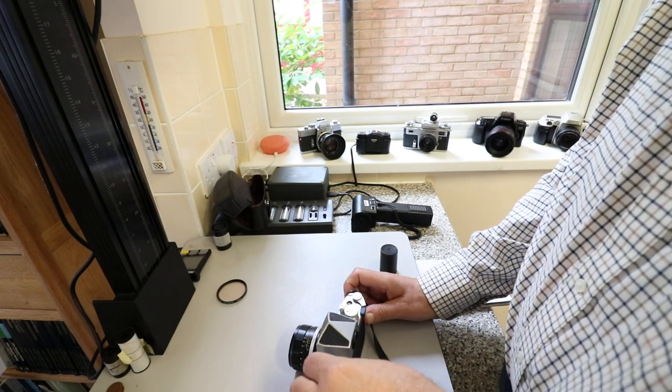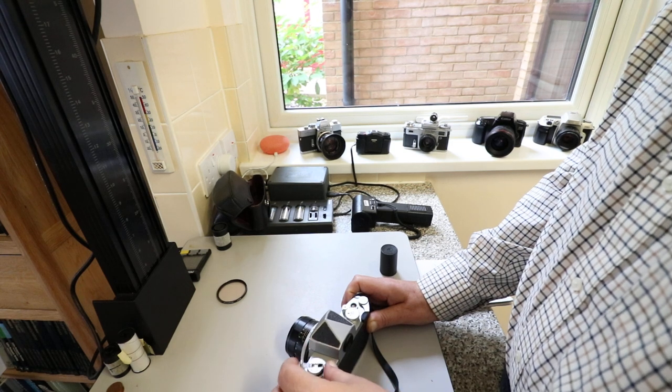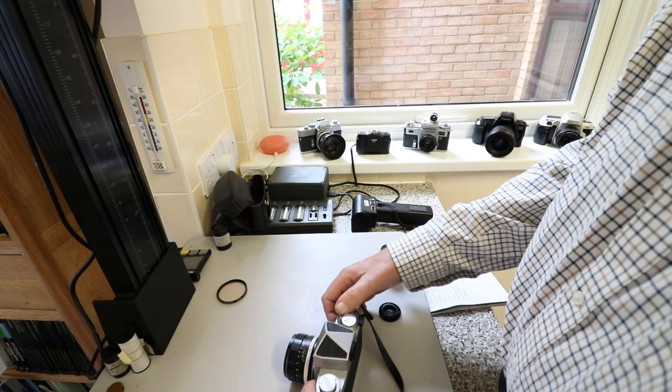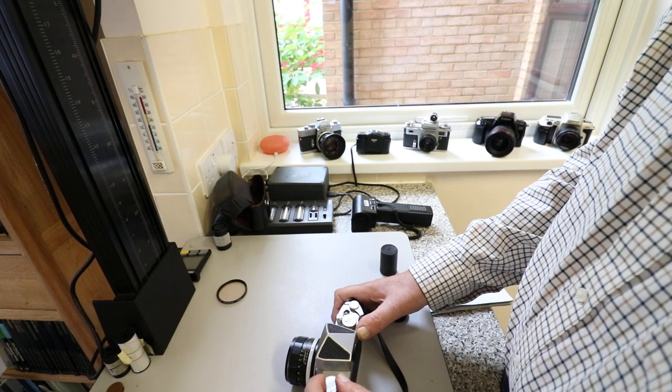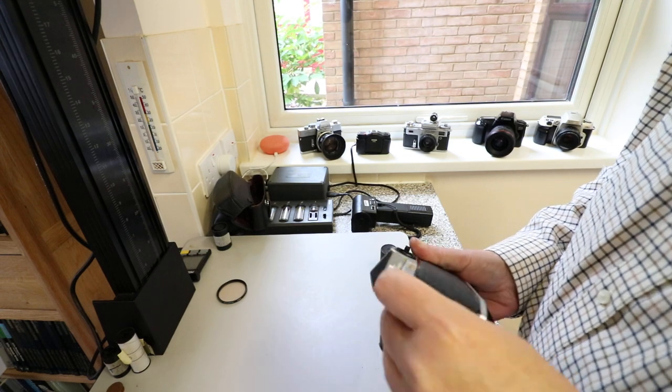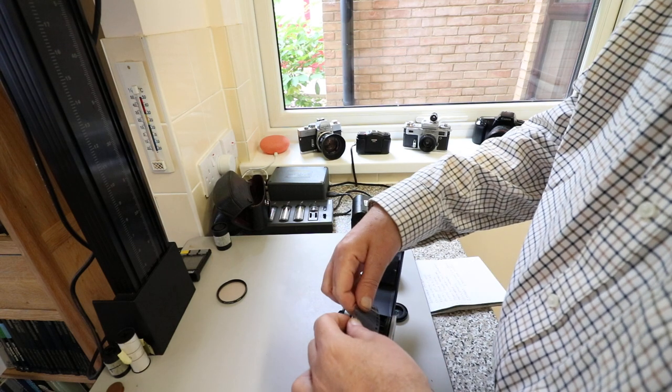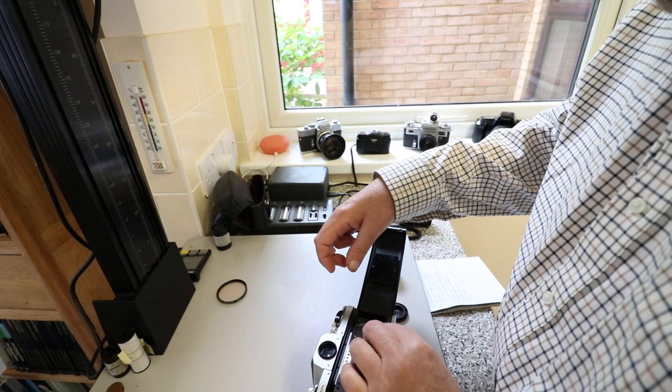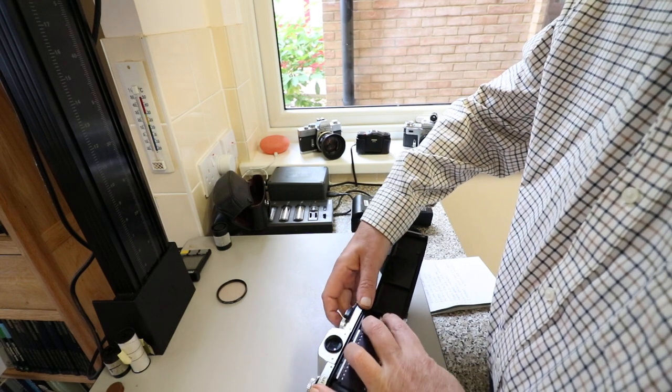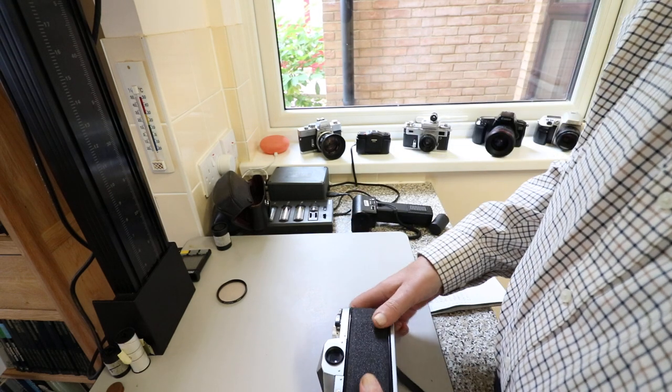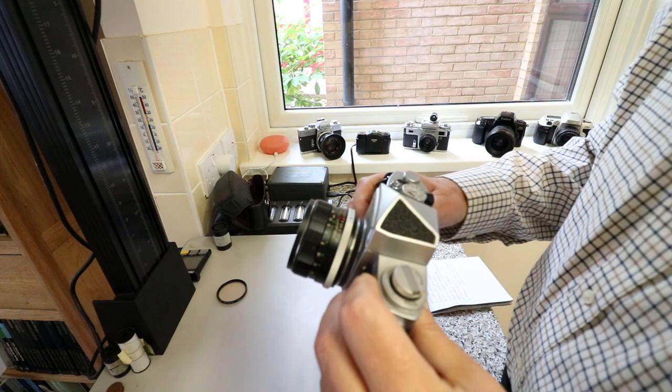The usual system into the take-up spool. That's a quite nice easy loading one. Wind it on until the second set of holes meet the sprocket. Lock the back. Wind and fire, and then as always, we just rewind the film until it's just tight. It's like it has a mind of its own. I don't see this going round, so that's a little bit worrying. Always with me on videos. That hasn't loaded properly.